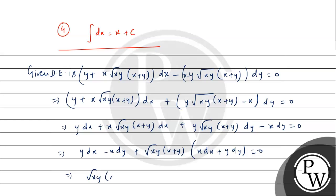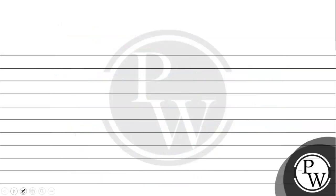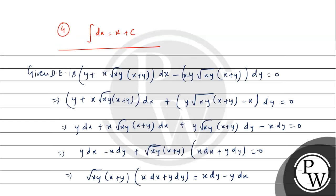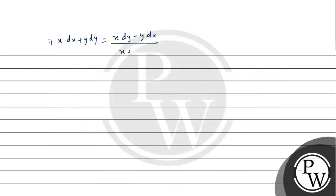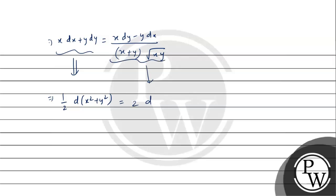Now √(xy)(x+y) times (x·dx + y·dy) can be rewritten, so x·dx + y·dy = (x·dy − y·dx) / (x+y)·√(xy). If you look carefully, the left side is half the differential of x² + y², and the right side is 2 times the differential of tan⁻¹(√(y/x)).